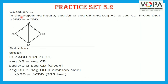Question 5. In the adjoining figure, segment AB is congruent to segment CB and segment AD is congruent to segment CD. Prove that triangle ABD is congruent to triangle CBD. Solution. In triangle ABD and triangle CBD: segment AB is congruent to segment CB, segment AD is congruent to segment CD — which is given — and segment BD is congruent to segment BD, which is a common side. Therefore, triangle ABD is congruent to triangle CBD by SSS test.